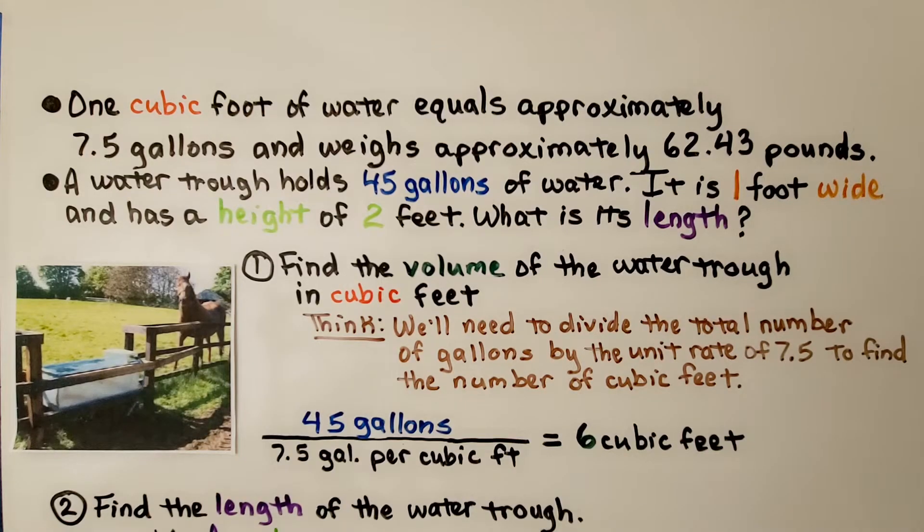One cubic foot of water equals approximately 7.5 gallons and weighs approximately 62.43 pounds. A water trough holds 45 gallons of water. It's one foot wide and has a height of two feet. What is its length?